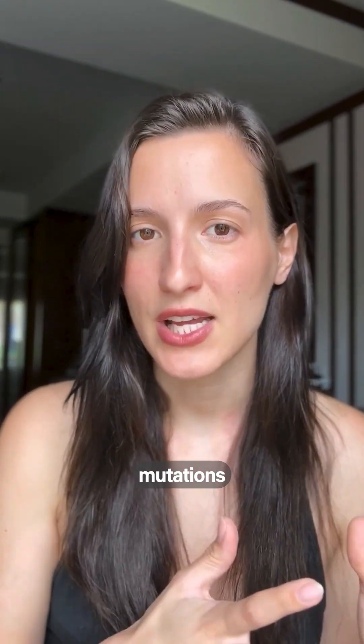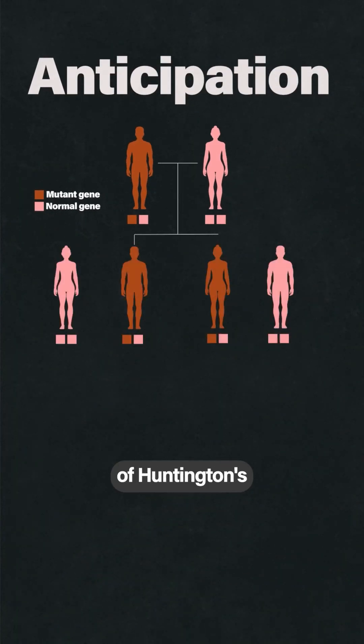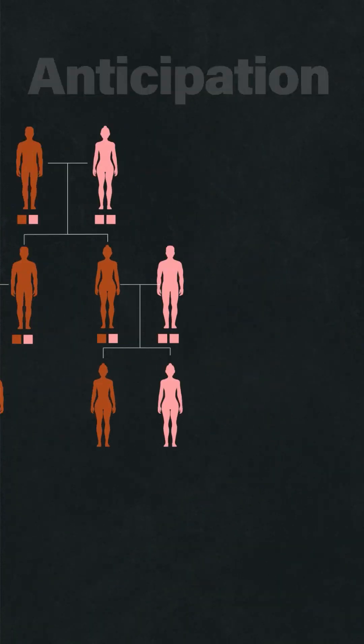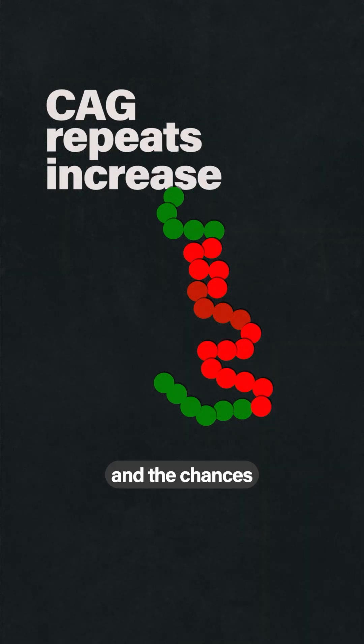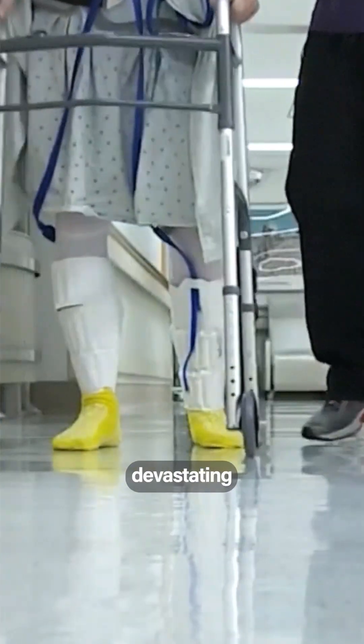But unfortunately, this also means Huntington's mutations exhibit something known as anticipation, meaning that with every generation of Huntington's patients, those CAG repeats increase, and the chances of developing this disorder earlier in life and in a more devastating manner also increase with every generation.